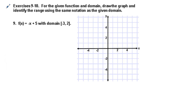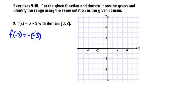Okay, the last one we'll do in the video is number nine. For the given function with domain x between negative three and two, draw the graph and identify the range using the same notation as the given domain. We're going to plug in these values first. I'm going to take f(-3): we get negative(-3) plus five — put the variable in parentheses to avoid mistakes — which is positive three plus five, so that equals eight. So f(-3) = 8.